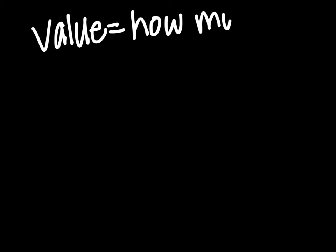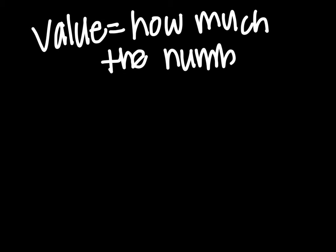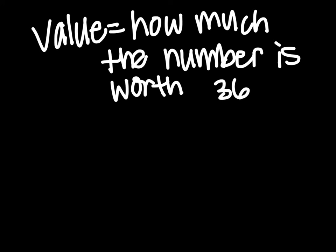The first word is value. And value is going to be how much the number is worth. So, for example, if I have the number 36, value is going to say, well, if I have a 3 in the number 36, what does that 3 really represent? And you would hopefully say that that 3 represents not 3 ones, but 3 tens. So we would say that we have 30. So the value of the 3 is actually 30.